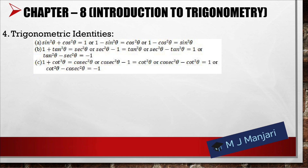The third trigonometric identity is 1 + cot²θ = cosec²θ. This can also be written as cosec²θ − 1 = cot²θ, or cosec²θ − cot²θ = 1, or cot²θ − cosec²θ = −1.